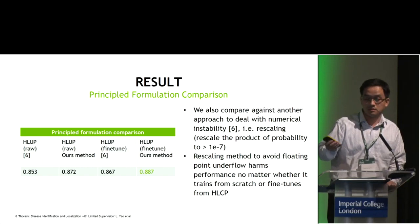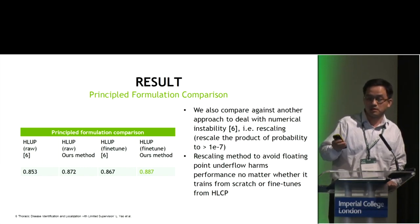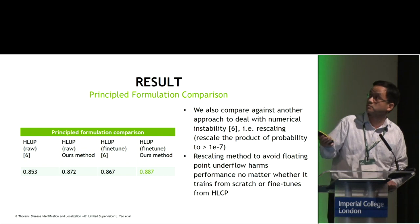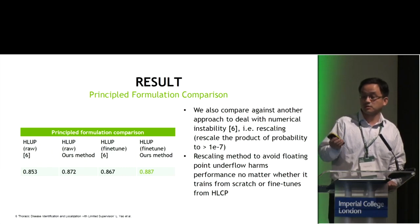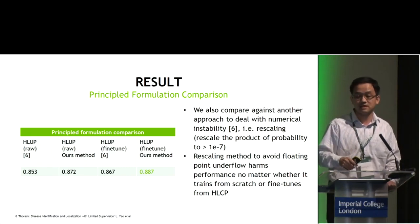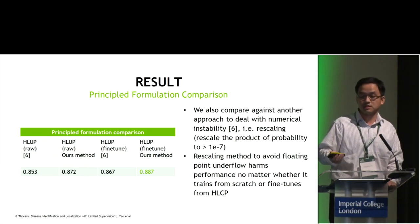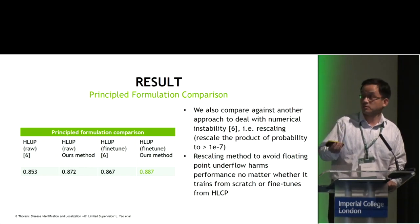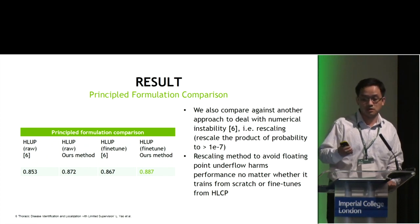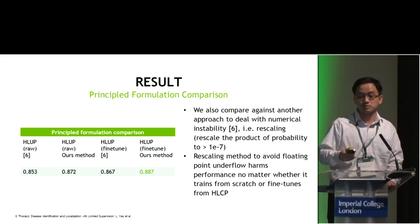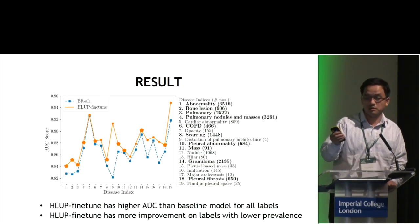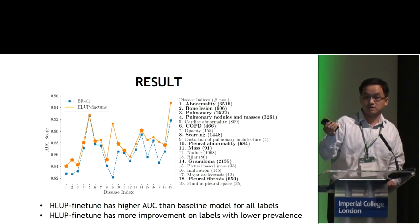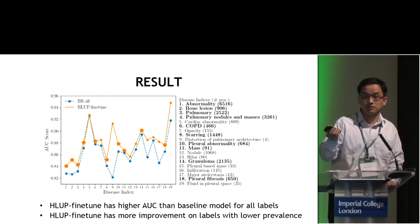Here I compare our numerical instability handling method with a baseline called rescaling, where they simply rescale the probability product to be greater than 10^-7. We find that this rescaling method actually harms performance, whether training from scratch or starting from the conditional probability model. Our detailed comparison with the traditional binary classification shows higher AUC for all labels, and all findings are statistically significant.